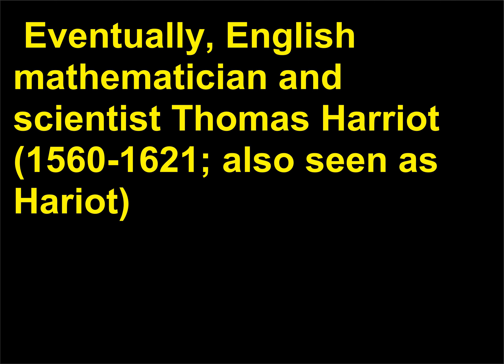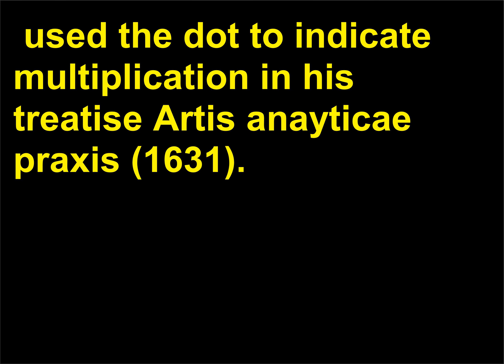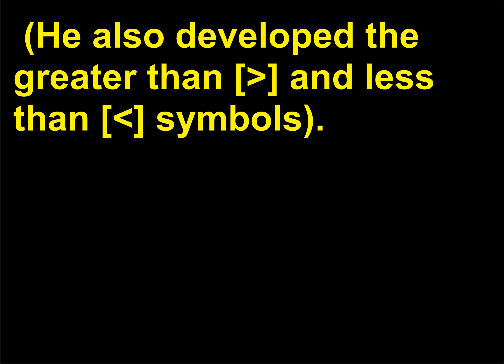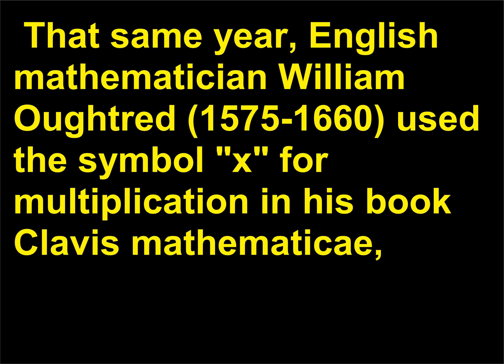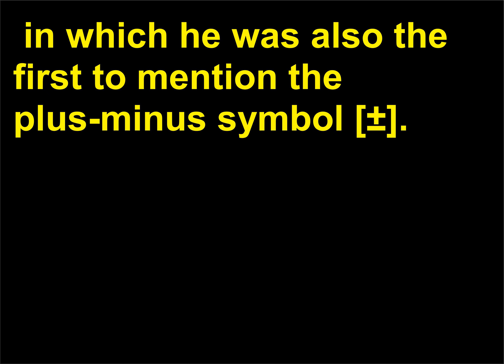Eventually, English mathematician and scientist Thomas Harriot, 1560–1621 (also seen as Harriot), used the dot to indicate multiplication in his treatise Artis Analyticae Praxis, 1631. He also developed the greater than and less than symbols. That same year, English mathematician William Oughtred, 1575–1660, used the symbol X for multiplication in his book Clavis Mathematicae, in which he was also the first to mention the plus-minus symbol (±).